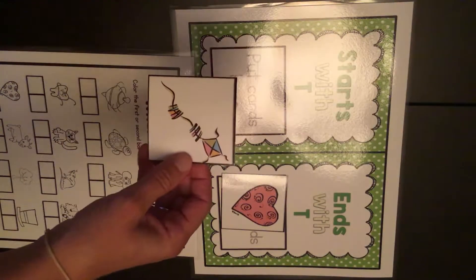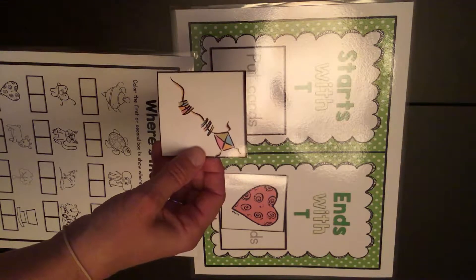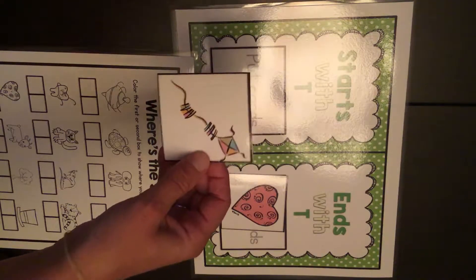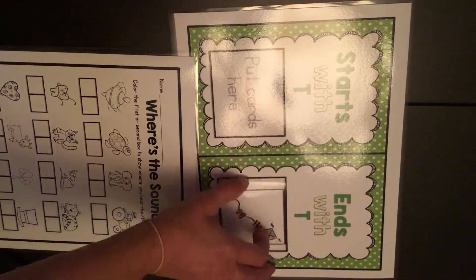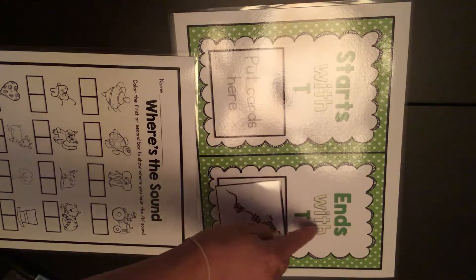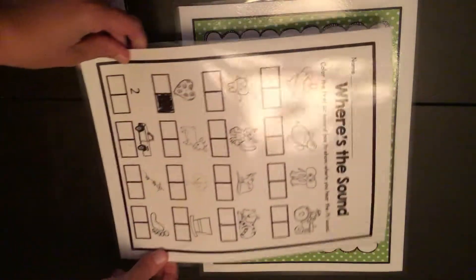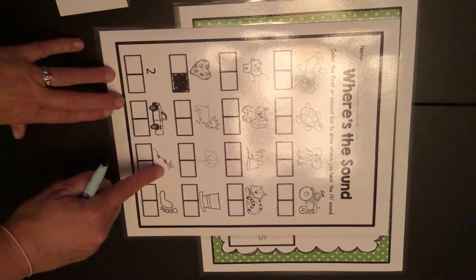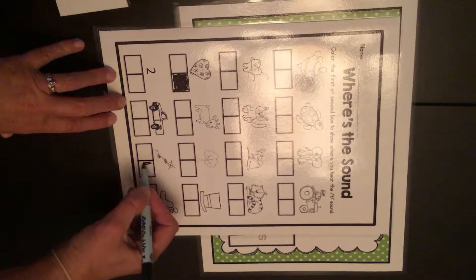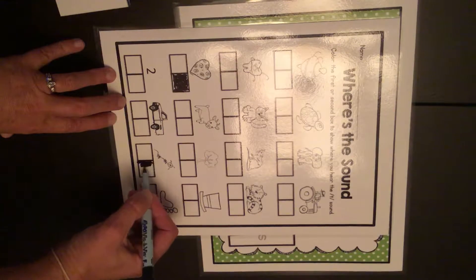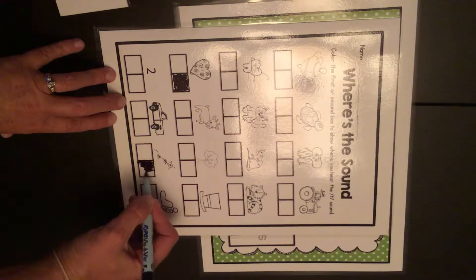Now here I see a kite. Kite. I hear that sound at the end again. So I'm going to put it here, ends with T. Now I look at my paper and I find the kite. It's right here. Kite. The T was the last sound in the word. So I color the second box again.